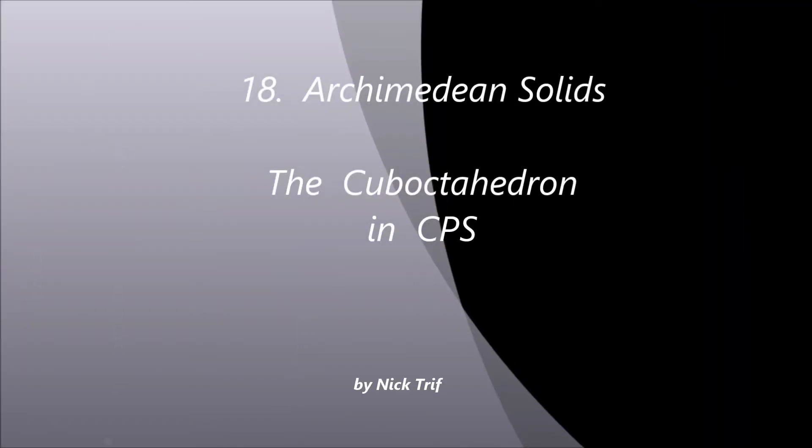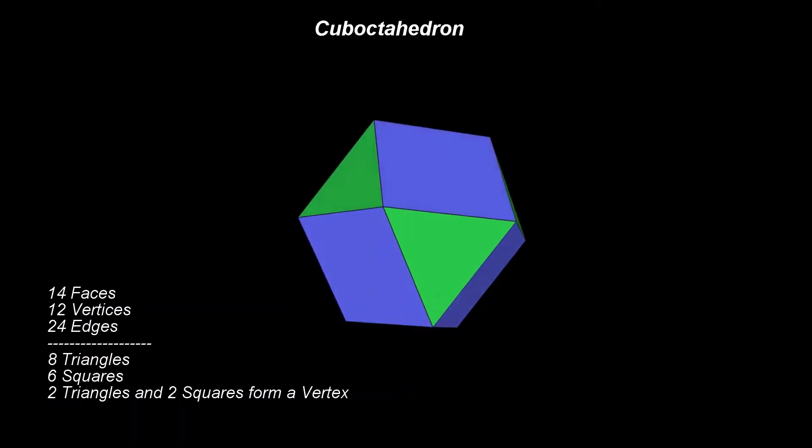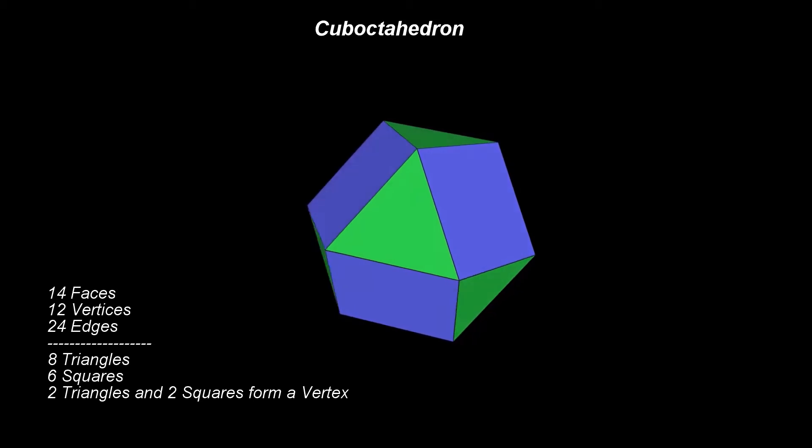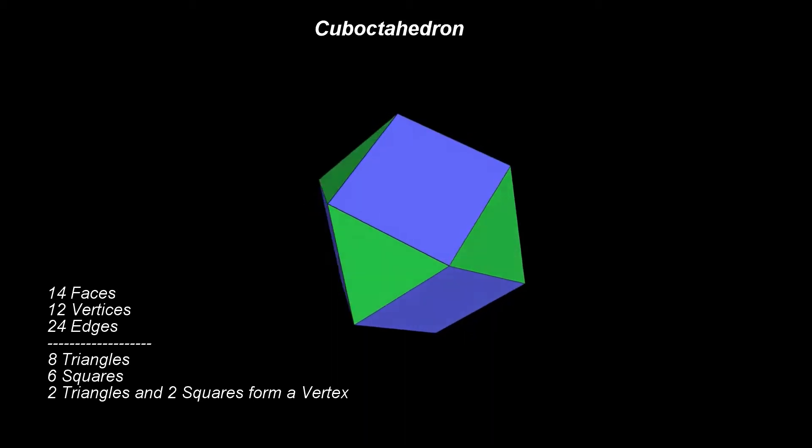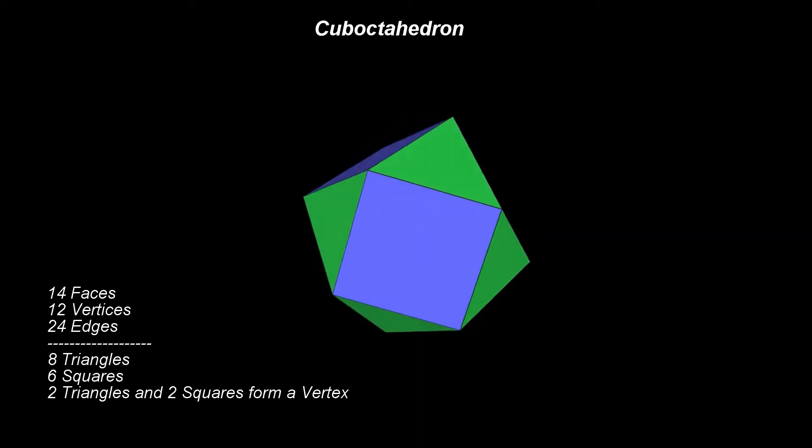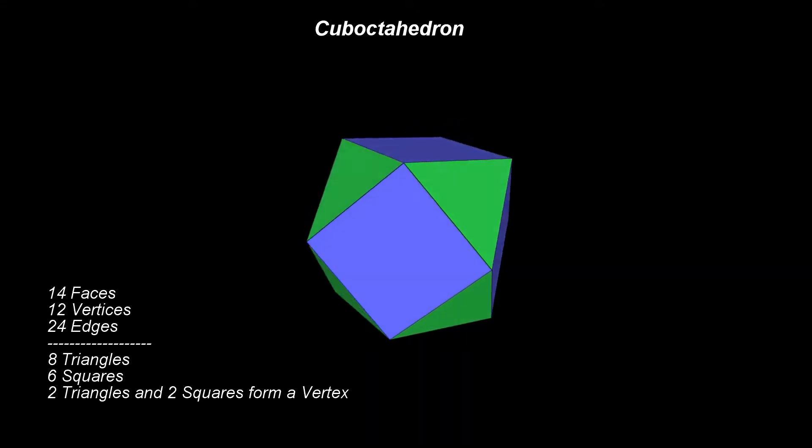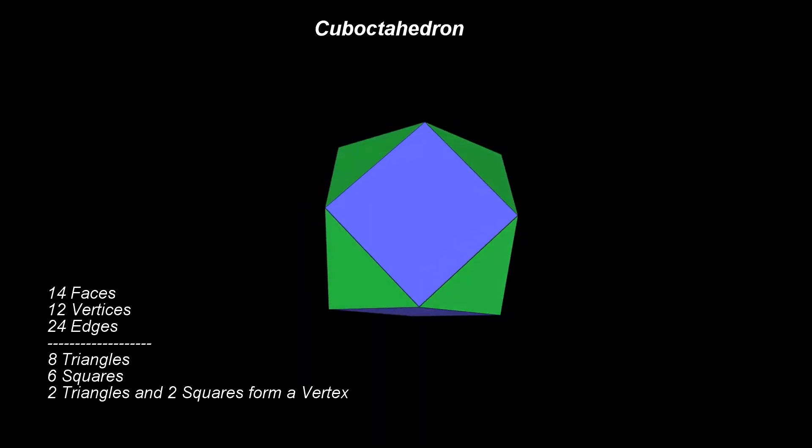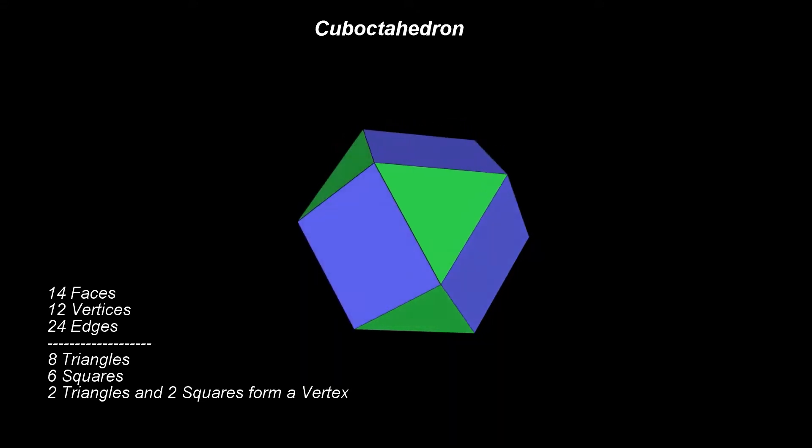Archimedean solids. The cube octahedron in CPS. A cube octahedron is a solid body with eight triangular faces and six square faces. It has 12 identical vertices and 24 identical edges.